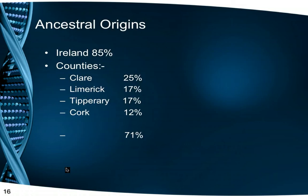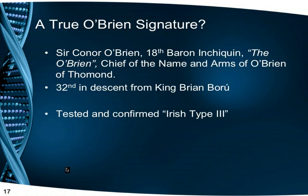Where the ancestral origins of my Irish Type 3 matches were known, 85% gave Ireland as their origin, and where the county was known, Clare, Limerick, Tipperary and Cork amounted to 71% of those origins. Around this time, Sir Conor O'Brien, Lord Inchiquin, the O'Brien, Chief of the Clan, was tested and confirmed as being Irish Type 3. He is 32nd in descent from King Brian Boru, and this was further proof that this was indeed the Dalcassian STR signature.